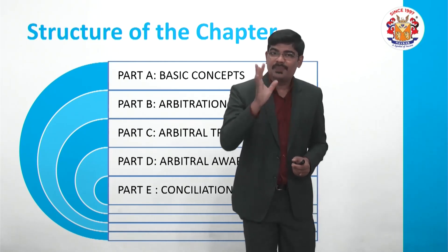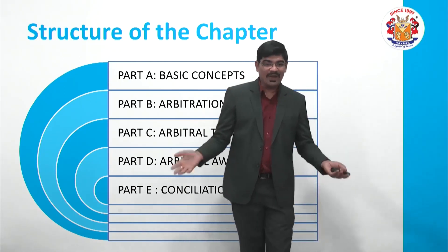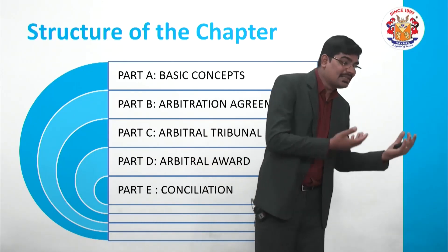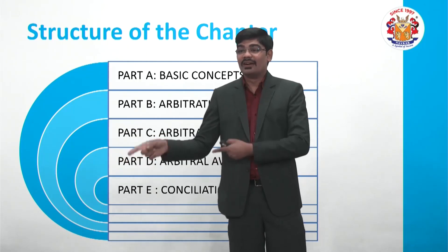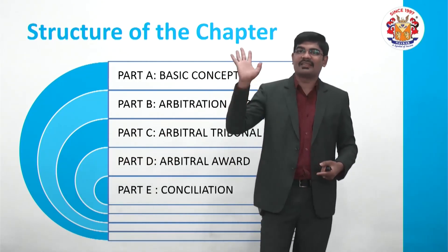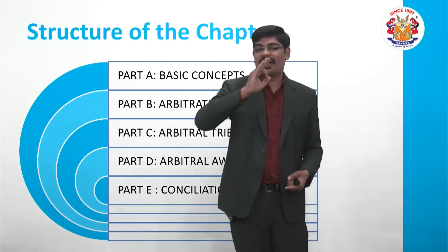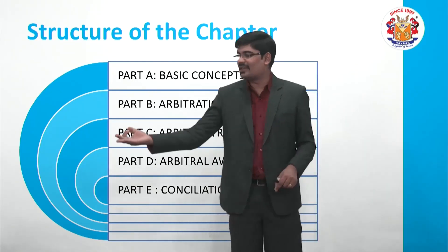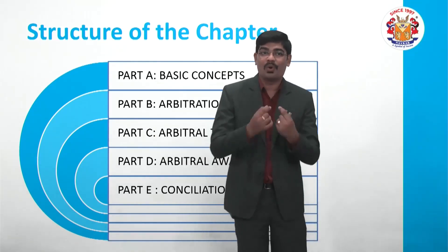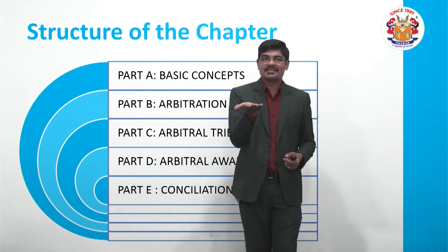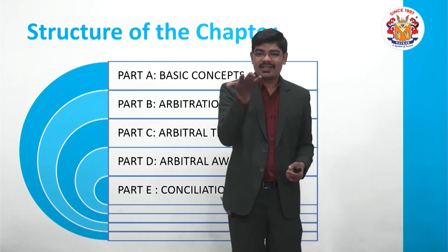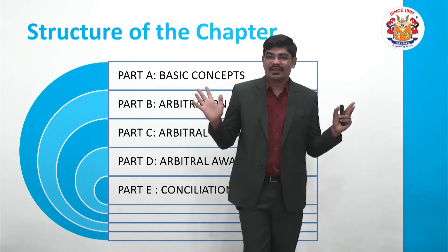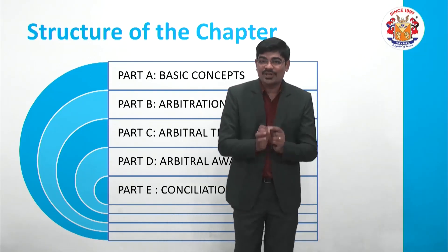Now let us create a disputing situation. Girls sold goods to boys; boys found the goods defective and complained. Girls denied the complaint, refused to accept the defect. Boys say goods are defective; girls say goods are not defective — and that is the point where the dispute arises. Now there is a need to have a solution to this dispute.